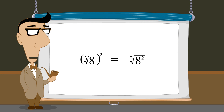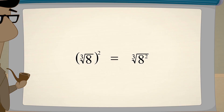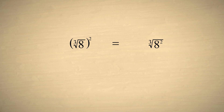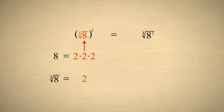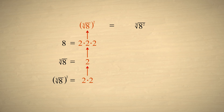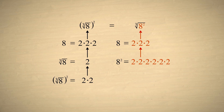If this still seems a bit like magic, let's look at it another way. Let's start by writing the number eight as two times two times two. When we take the cube root, this leaves us with one two. Then squaring this gives us two twos. On the right side, we again start by writing eight as two times two times two. We then square this quantity, giving us six twos. Then, taking the cube root, leaves us with two twos. So in both cases, we end up with two twos multiplied together, which equals four.